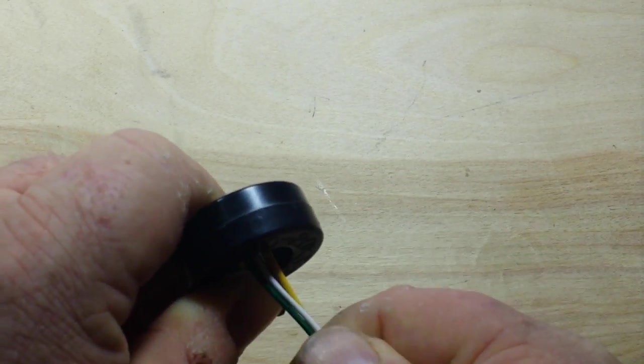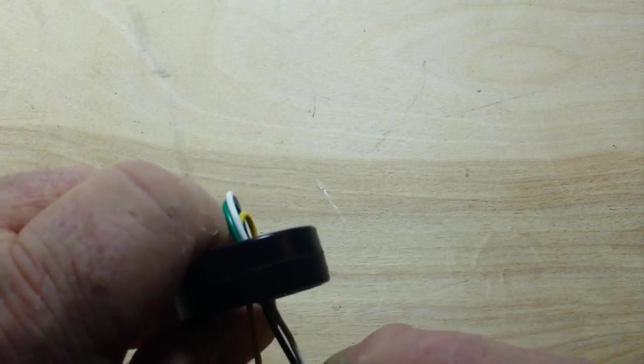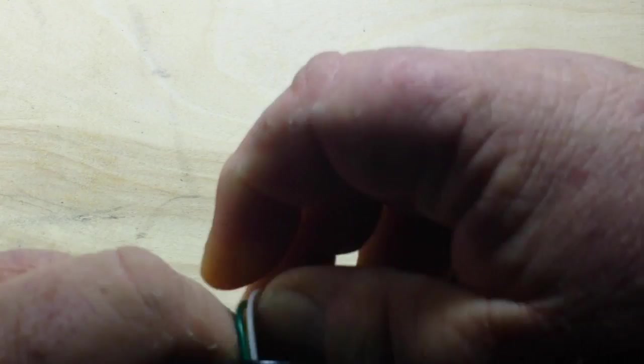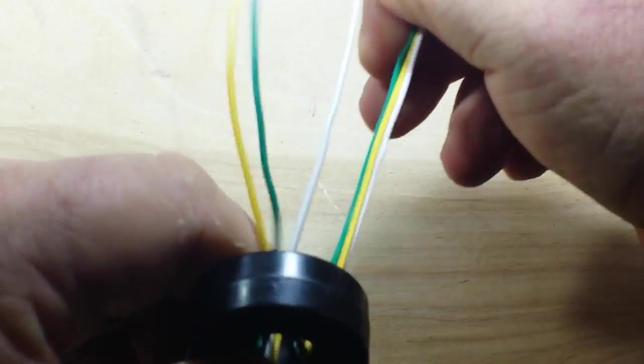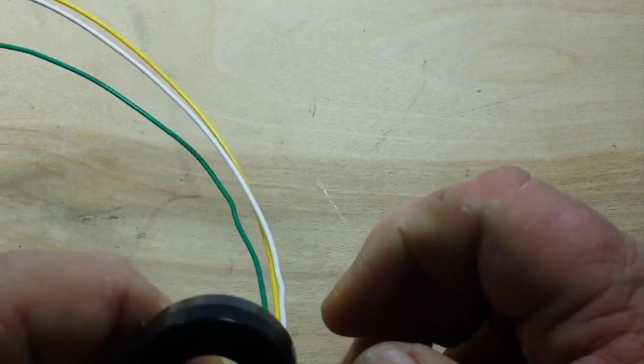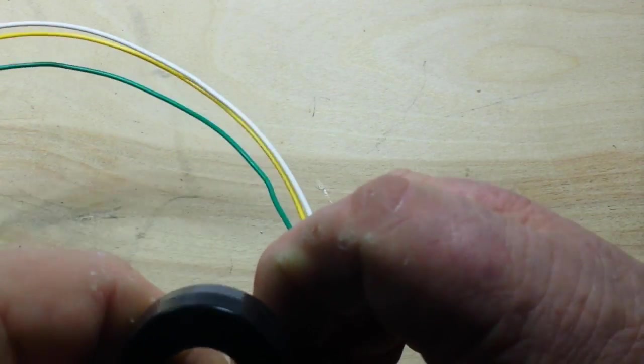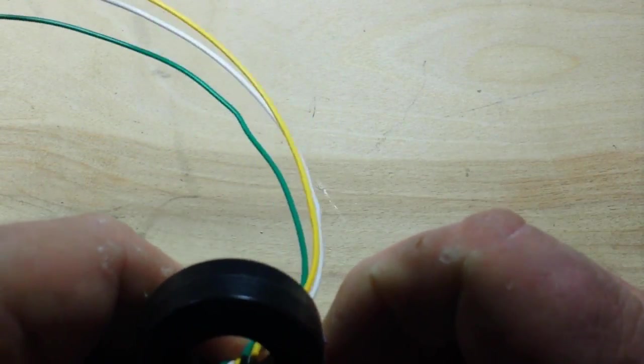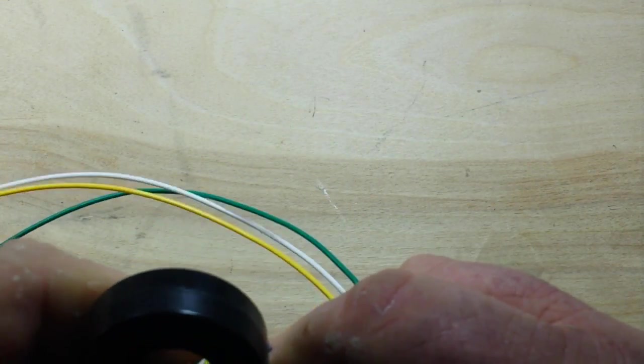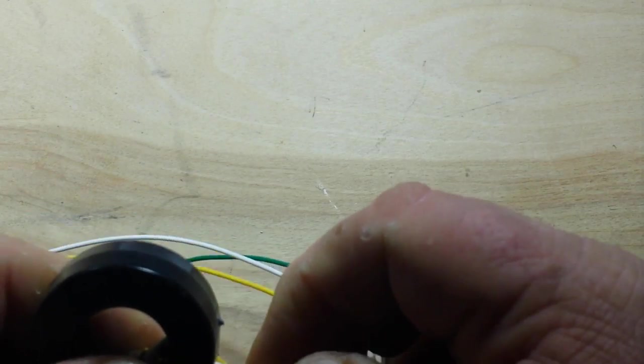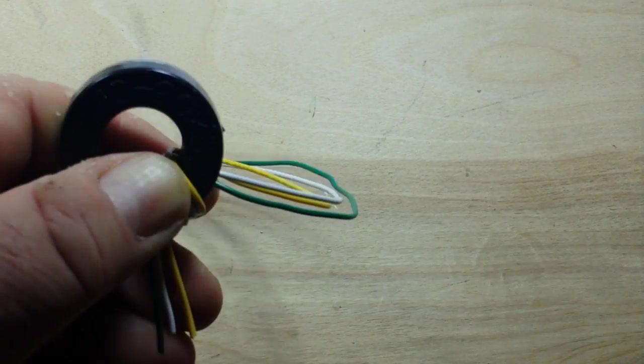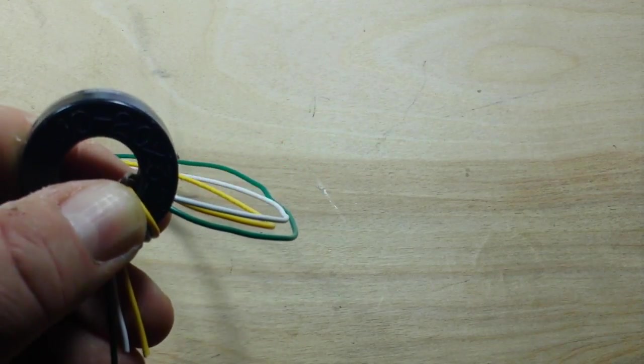So what I like to do is just kind of poke them through like this, and then once they're through, give them a nice pull. Make sure that everything is lined up neatly, and then we can go on to the next row. I'm not going to make you watch me wind this nine times, but I'll be back when it's done.